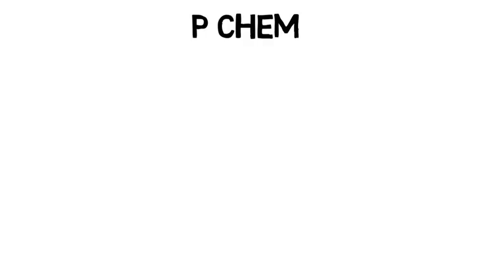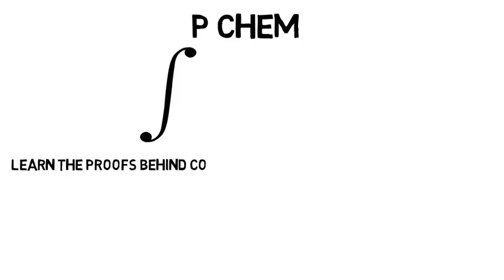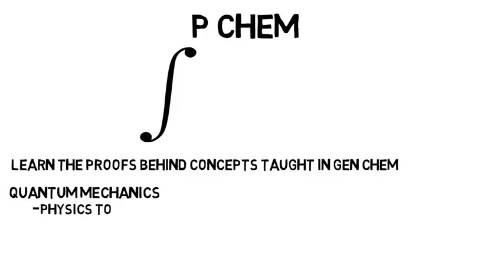Then p chem is where the high-level math comes in. You will probably be required to use calculus throughout these classes. You will learn the proofs behind concepts taught in gen chem and why most of these concepts were grossly oversimplified to what actually happens. You'll even get into quantum mechanics, which is a big physics topic, but you'll see how it applies to chemistry.